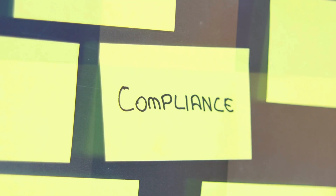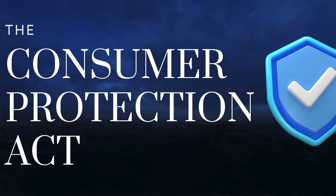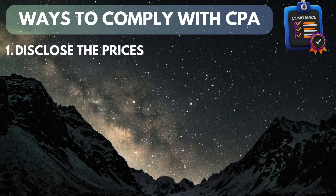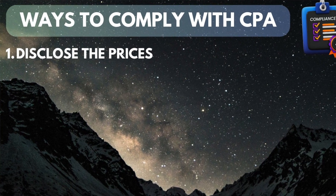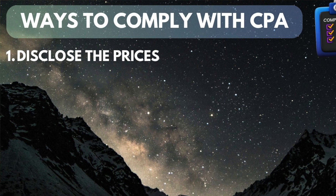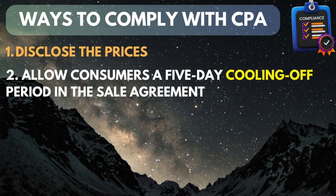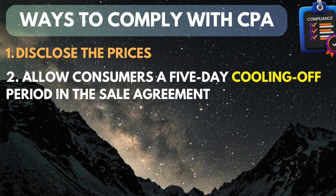Now we'll be talking about the ways in which a business can comply. How do you comply? Compliance means doing the right thing under the Consumer Protection Act. Number one: you have to disclose all prices. You must not hide the price or change prices when a customer enters. All prices for products on sale must be visible for people to see.